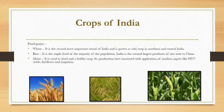Crops of India — food grains. Wheat: it is the second most important cereal of India, grown as a Rabi crop in northern and central India. Rice: it is the staple food of the majority of the population; India is the second largest producer of rice after China. Maize: it is used as both food and fodder crop, and its production has increased with application of modern inputs like high-yielding variety seeds, fertilizers, and irrigation.